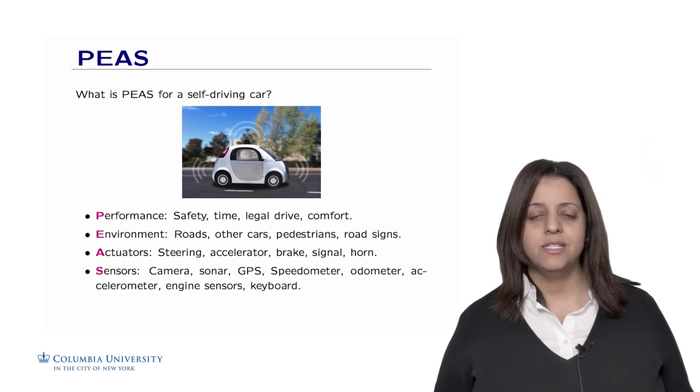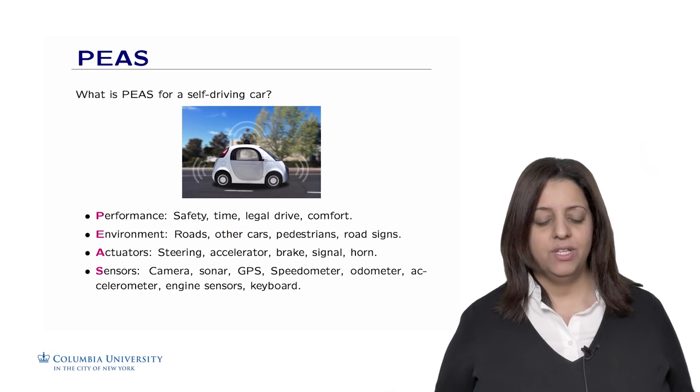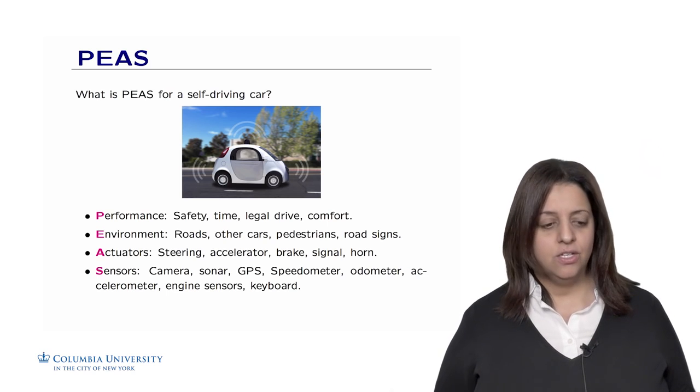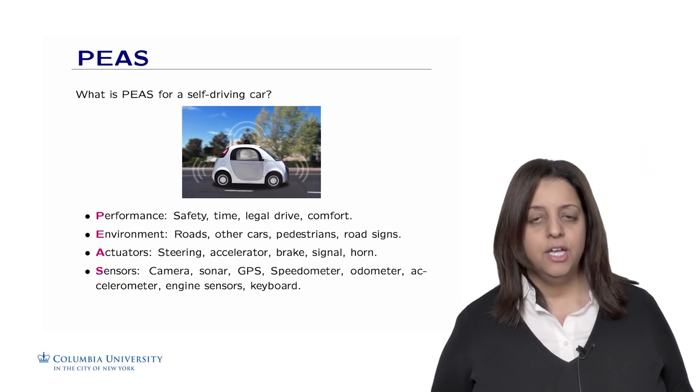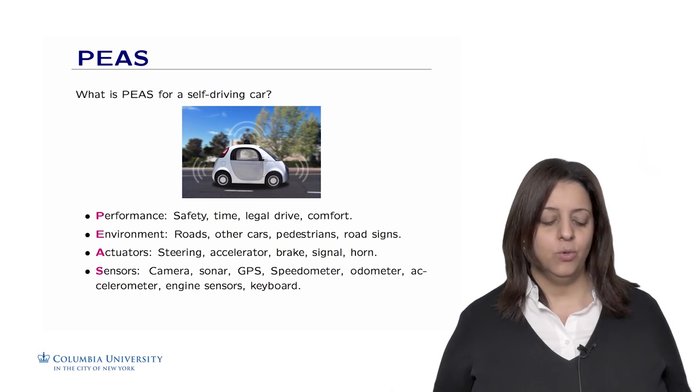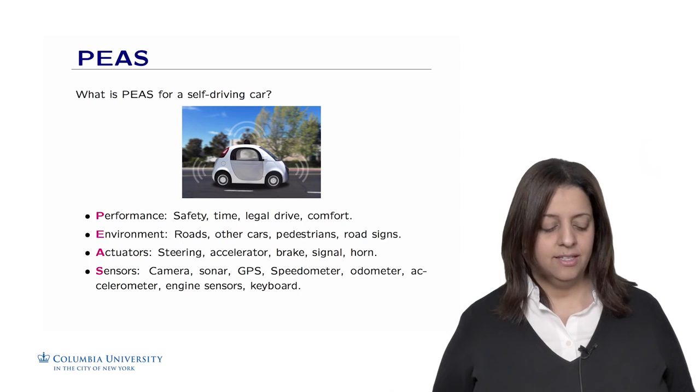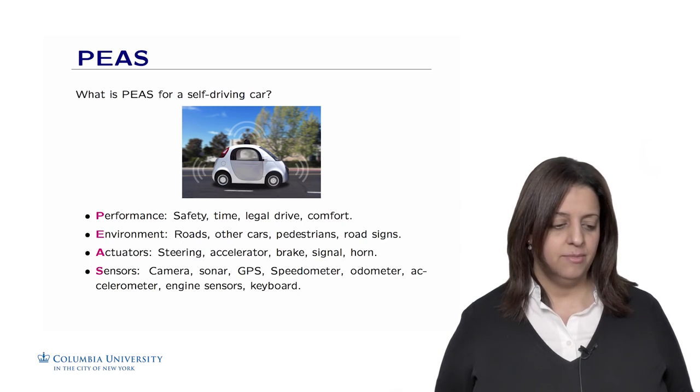And finally, the sensors. The self-driving car is actually equipped with lots of different sensors. This includes a camera, a sonar, a GPS, a speedometer, an odometer, and the keyboard, along with other kinds of sensors that allow the car to perceive the environment.